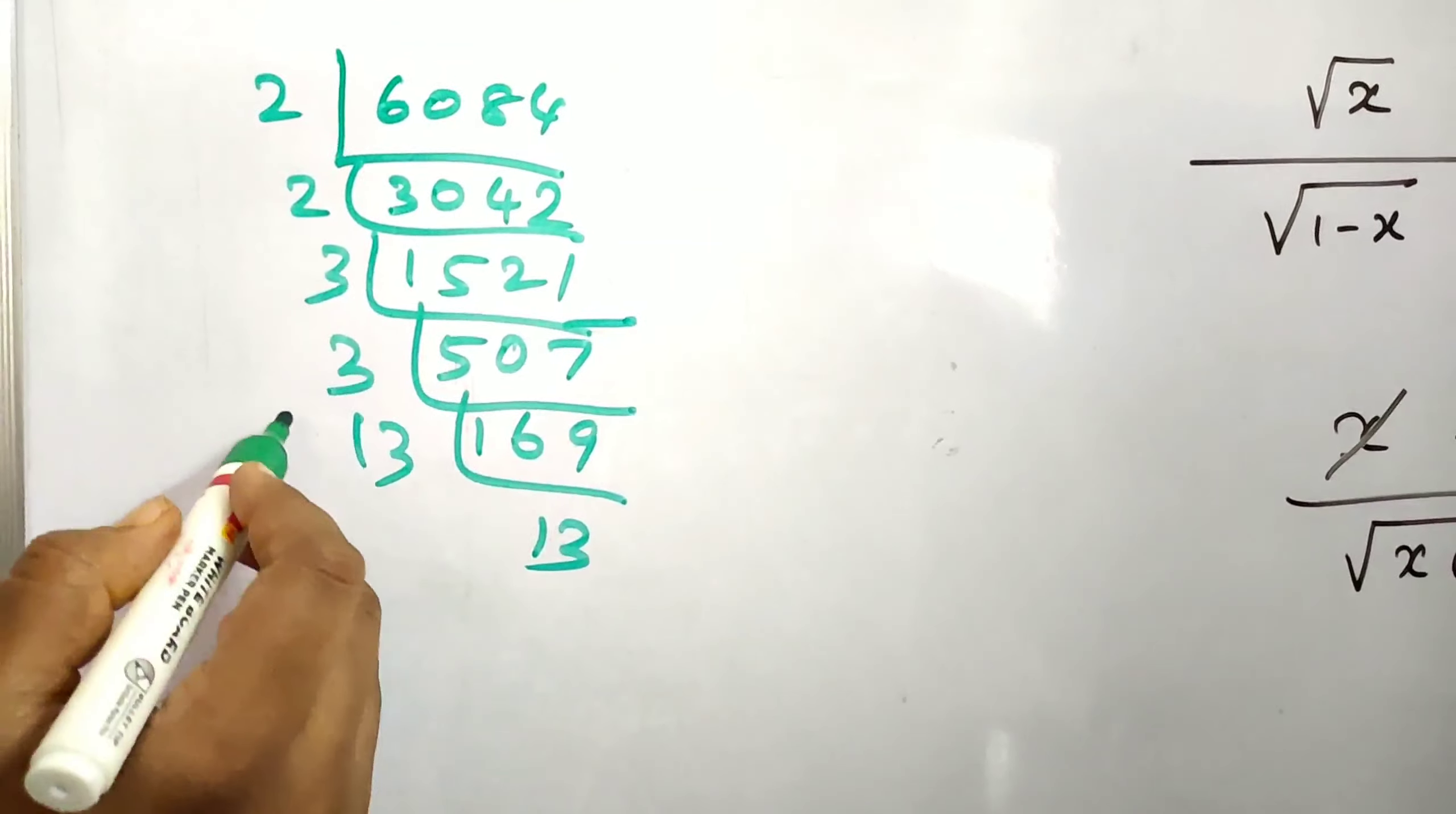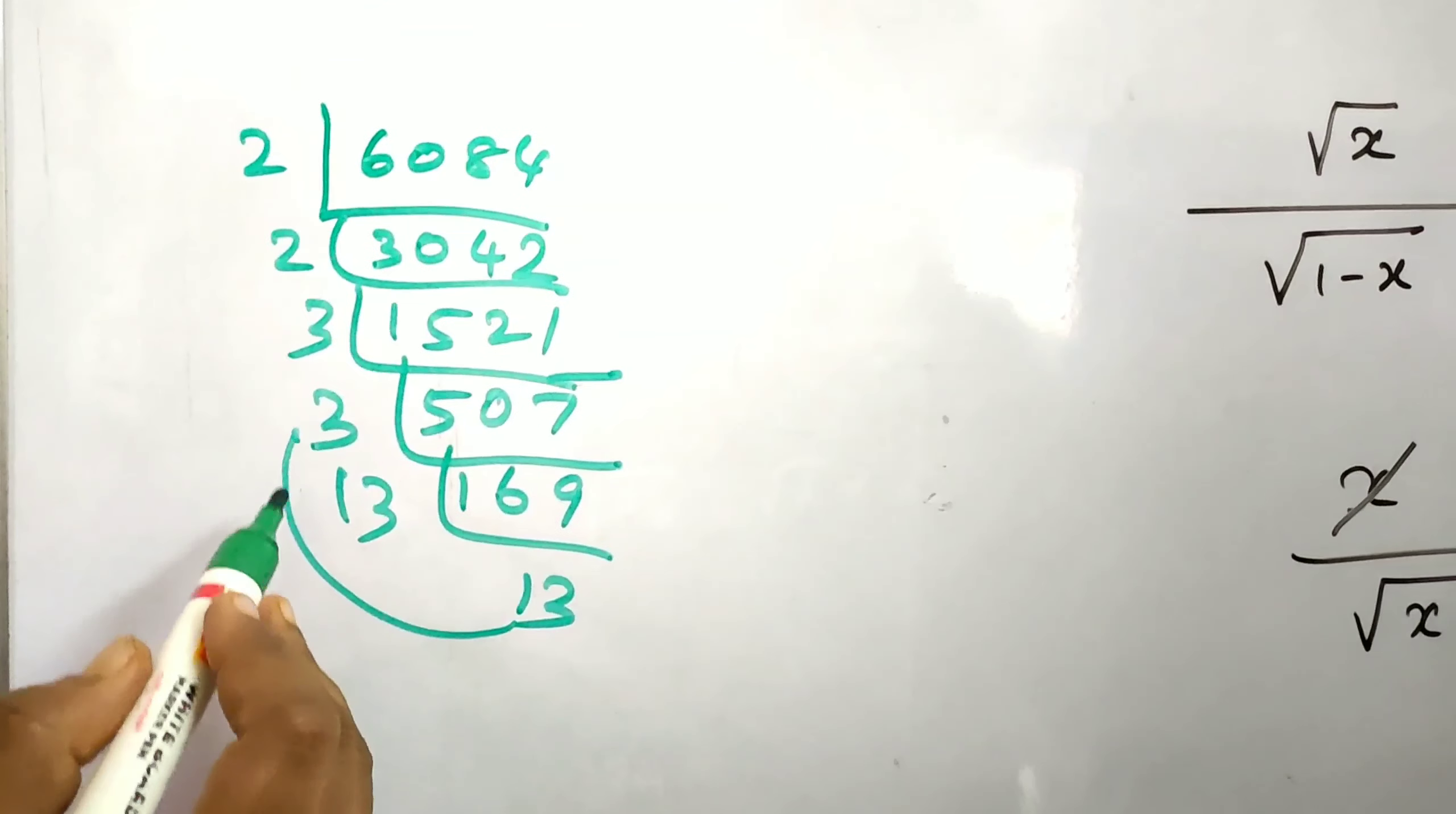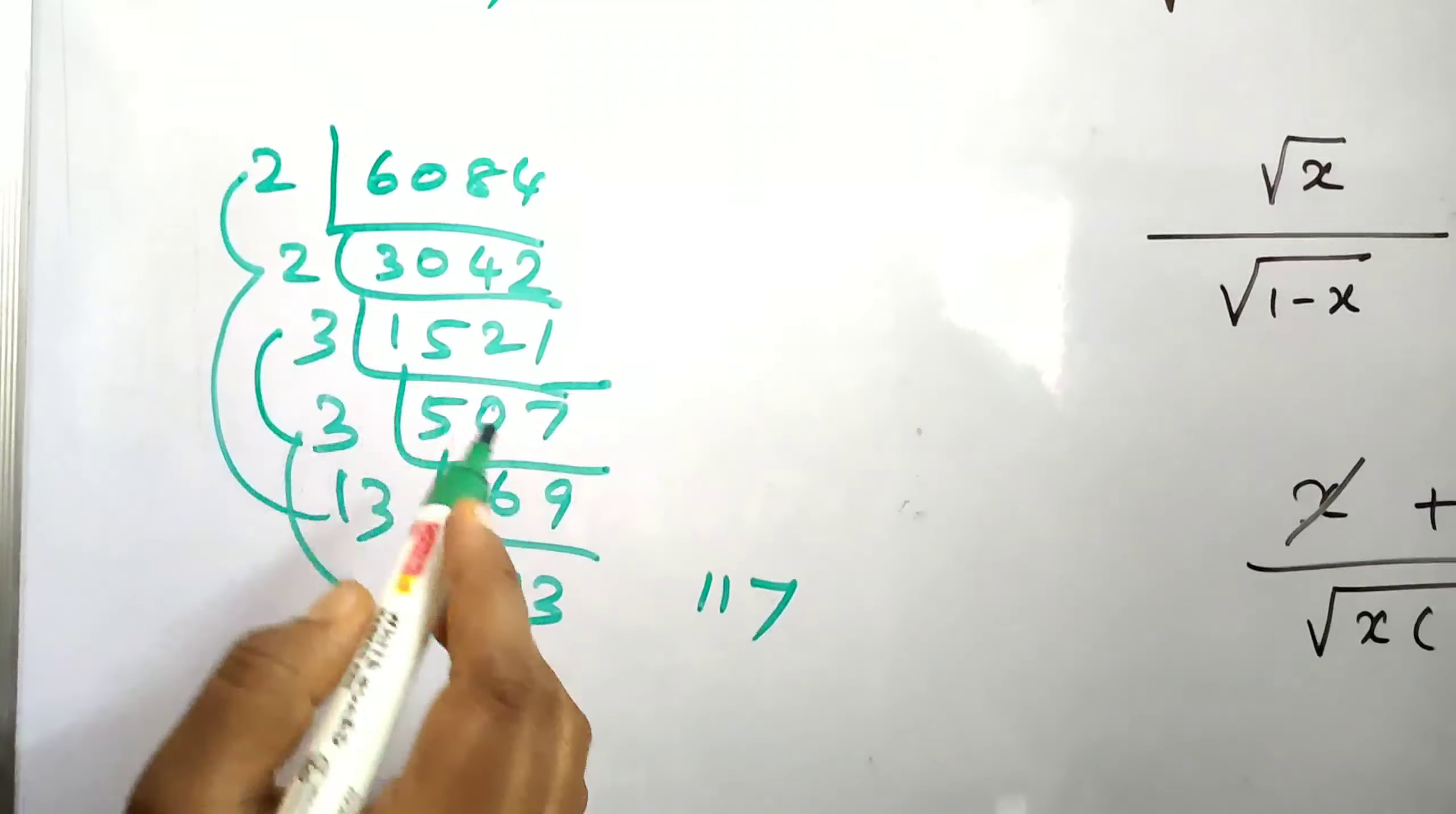Pick two numbers that when added give 169. 13 times 3 is 39, then 39 times 3 is 117. Again 13 times 2 is 26, 26 times 2 is 52.